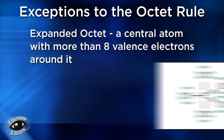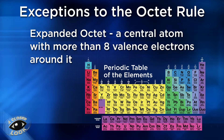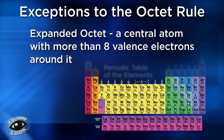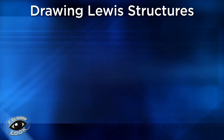There is another exception occasionally found in larger elements. These elements can form what is known as an expanded octet, in which there is a central atom with more than eight valence electrons around it. Now let's go over the basic steps for creating Lewis structures, and then look at examples using several types of molecules.